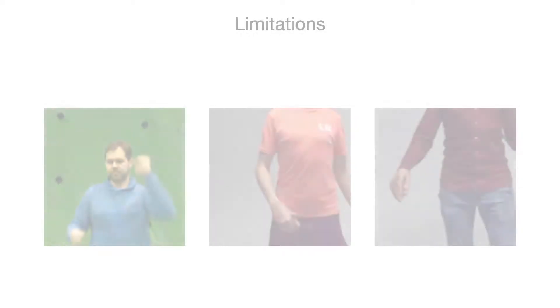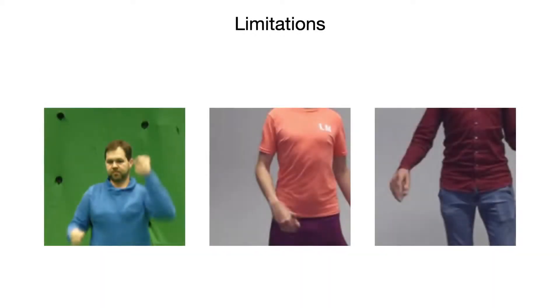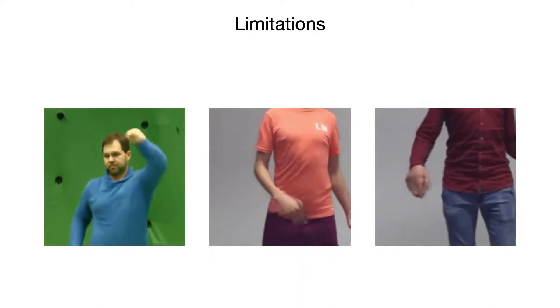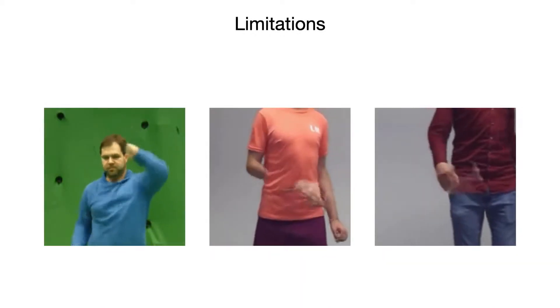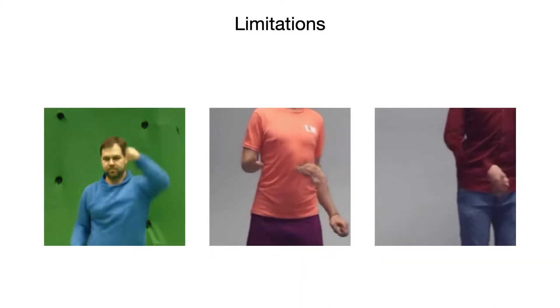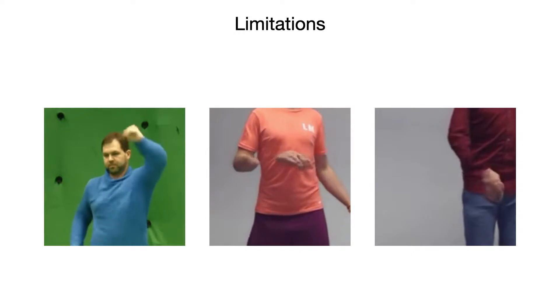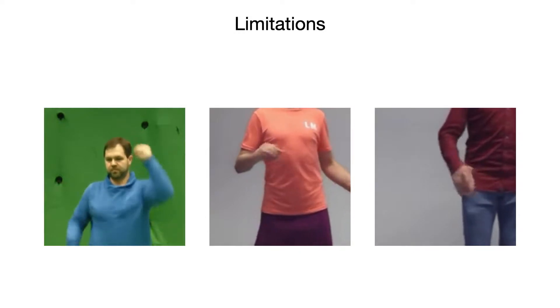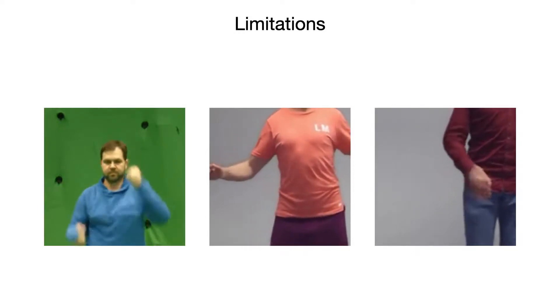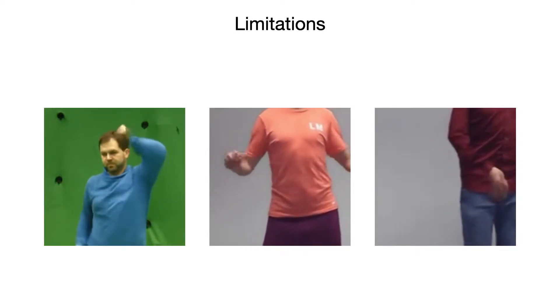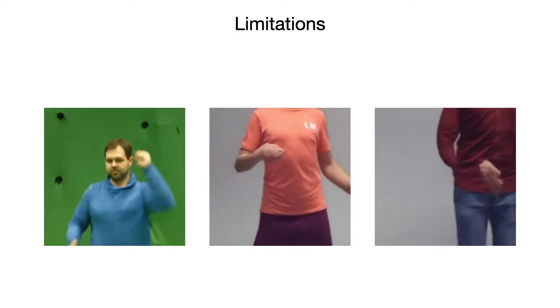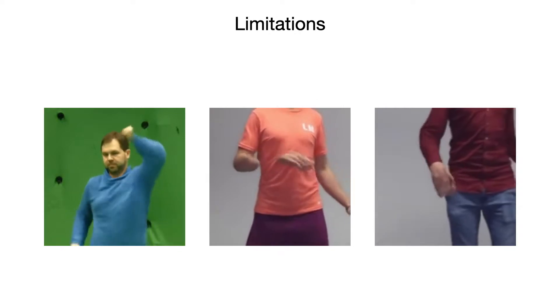Our technique can produce artifacts due to the depth ambiguity of 2D poses and errors in body part segmentation. These effects propagate through our framework and result in incorrect occlusions or disconnected limbs, as shown in these examples.